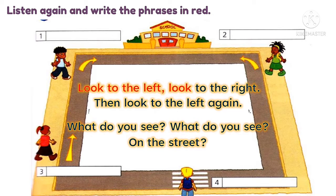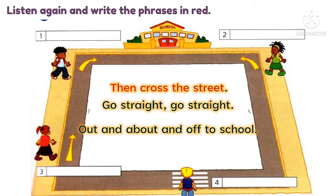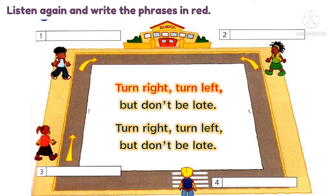Look to the left, look to the right, then look to the left again. What do you see on the street? Do you see a car? No. Do you see a bike? No. Do you see anything? No. Then cross the street, go straight, out and about and off to school. Turn right, turn left, but don't be late.